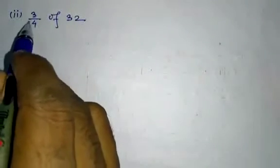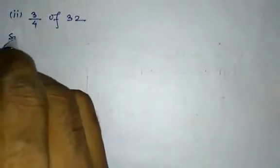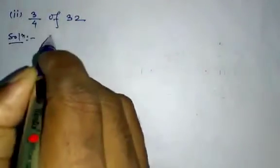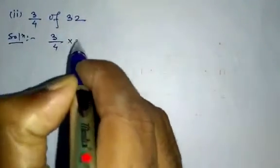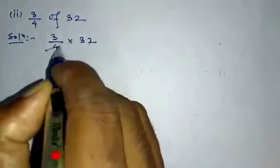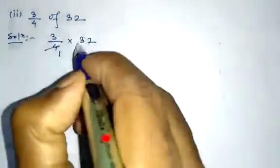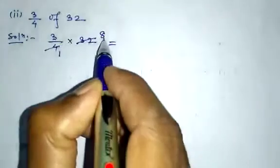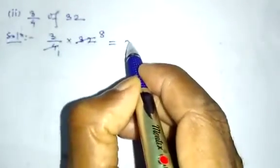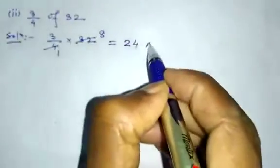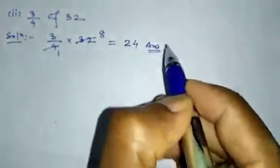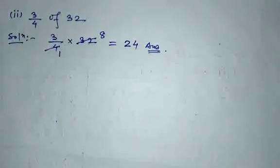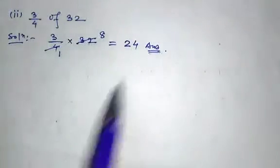Question number 2: find 3/4 of 32. Solution: 3/4 into 32. Cancel 4 — 4 eights are 32 — so the product of 3 and 8 is 24. The answer is 24.